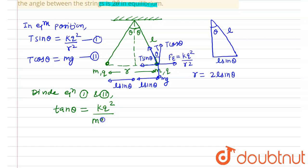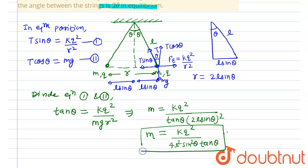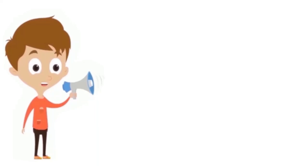From here, m equals kq² upon tan θ. And r is 2l sin θ squared, so m equals kq² upon 4l² sin² θ tan θ. This is the value of m, mass.